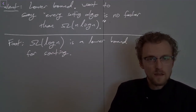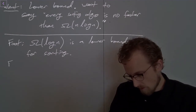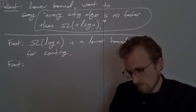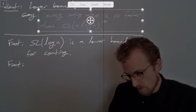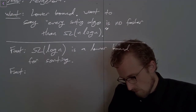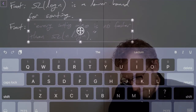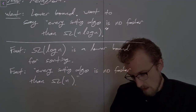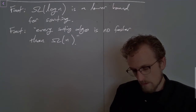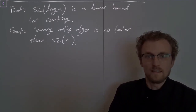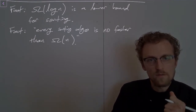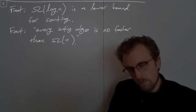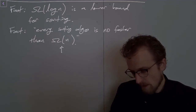We can extend this to say that linear time is a lower bound for sorting. Every sorting algorithm is no faster than big Omega of n. A sorting algorithm has to consider every single element of the array — at least. It has to look at everything in the array to identify whether or not each element is in the right place. If it's looking at everything in the array, then its complexity has to be at least linear — at least big Omega of n.